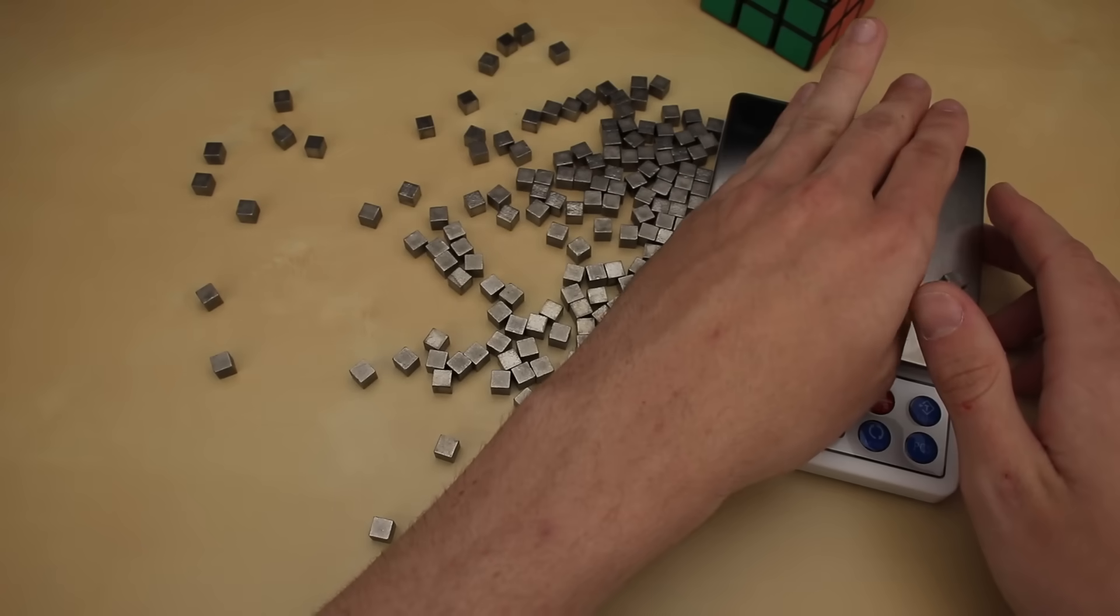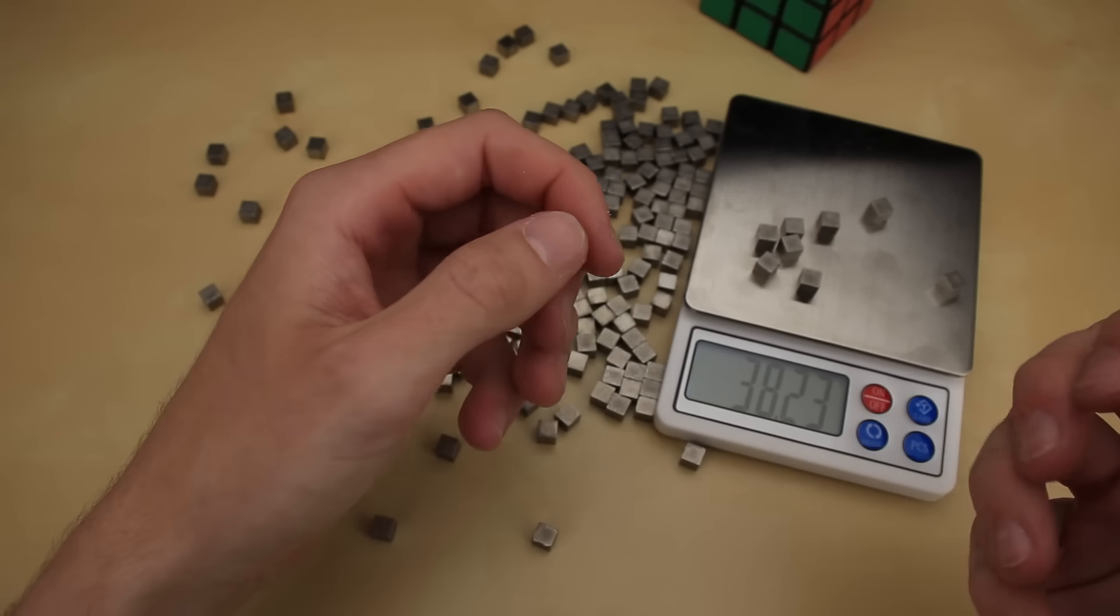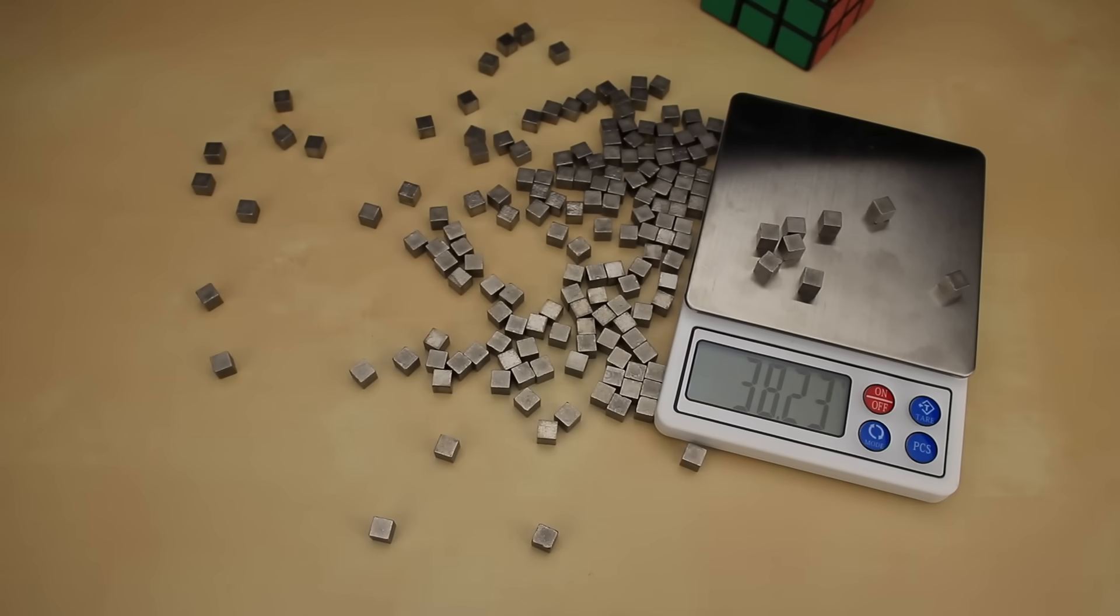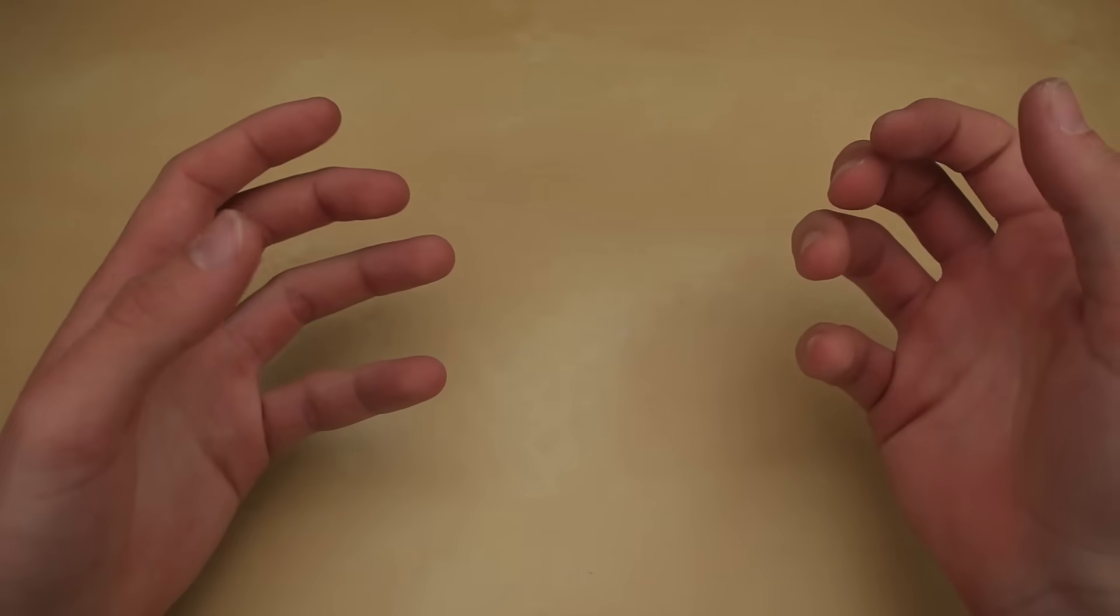Now if we go ahead and weigh eight of these, that means 20 times 38 grams - that's over 750 more grams that we're going to be adding to a puzzle. Alright, I like where this is going. I wonder if we can hit 1000 grams or one kilogram - that would be amazing.